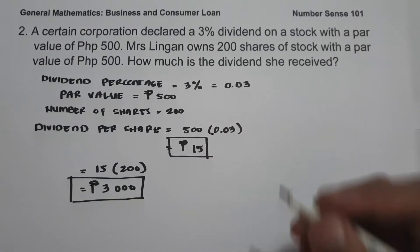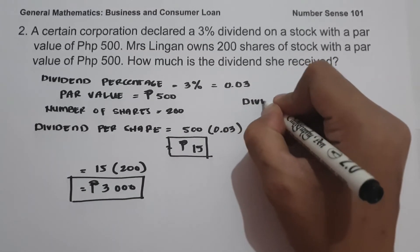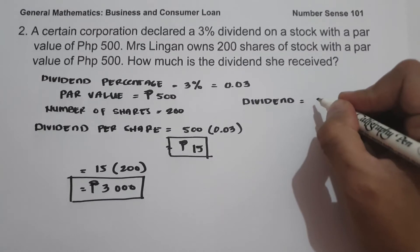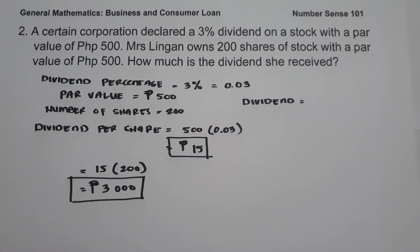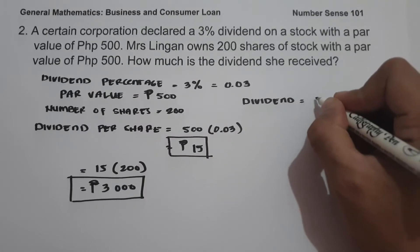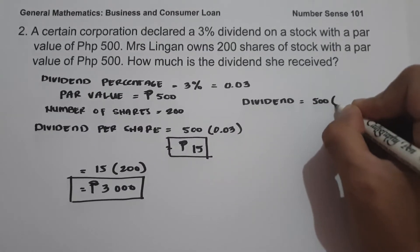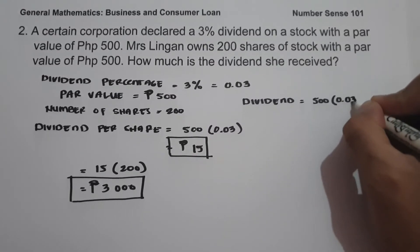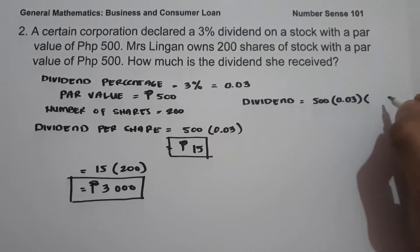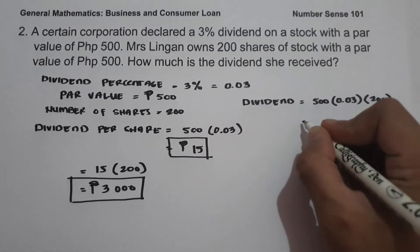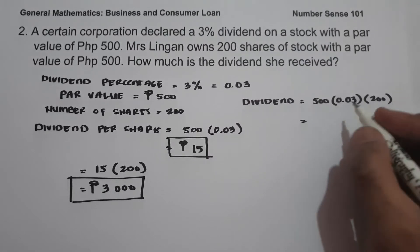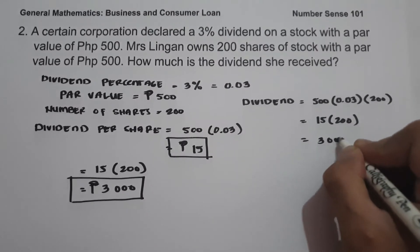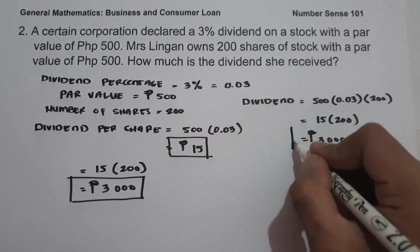For the second solution, we simply multiply the dividend percentage, the par value, and the number of shares all together: 500 multiplied by 0.03 multiplied by 200. That gives us 15 times 200, which equals 3,000 pesos. We come up with the same answer.